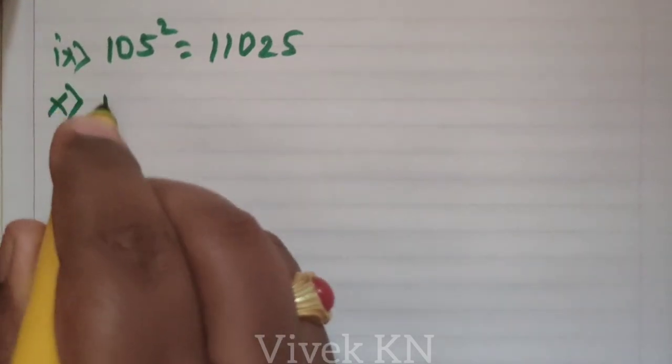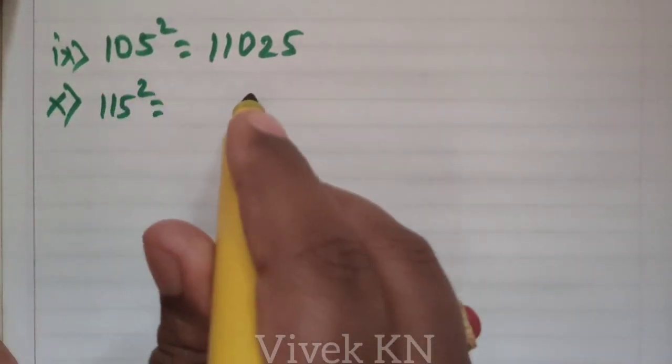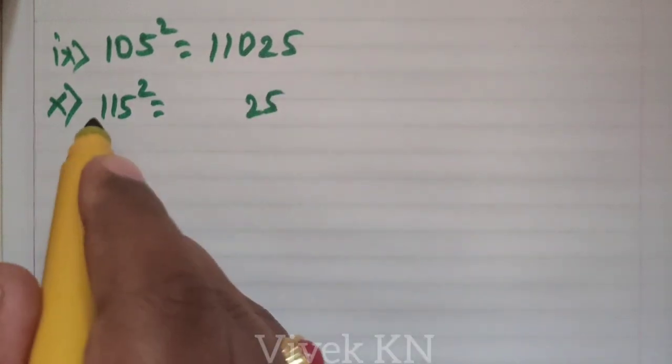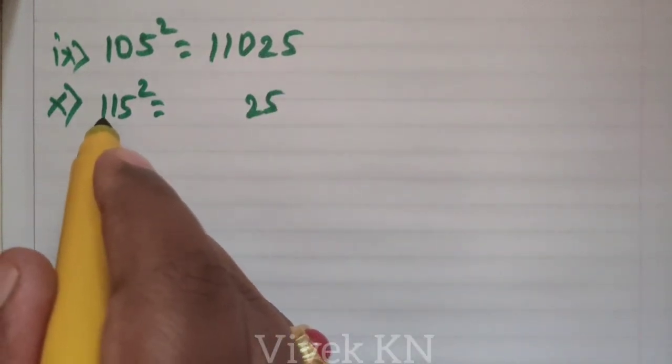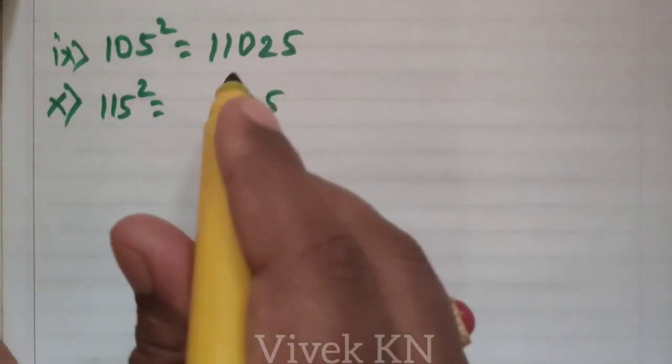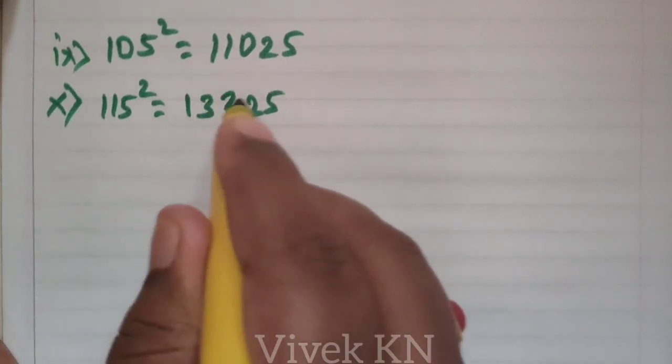Next, 10th one. 115 square. 5 square is 25. The number that comes after 11 is 12. 12 into 11 is equal to 132.